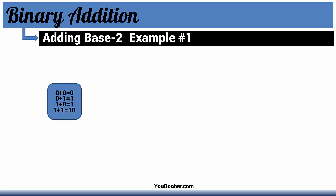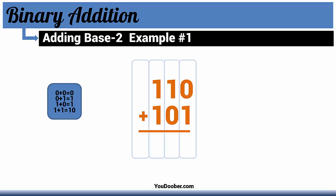Now for our first example, I put the magic table off to the left just as a reference. So we have 1, 1, 0 plus 1, 0, 1. Let's just work it out.